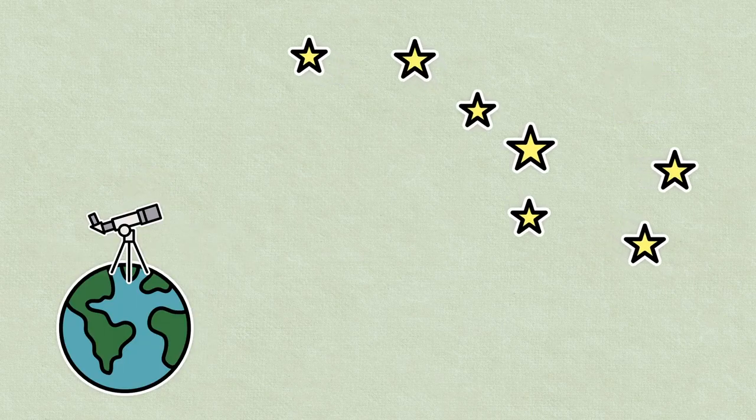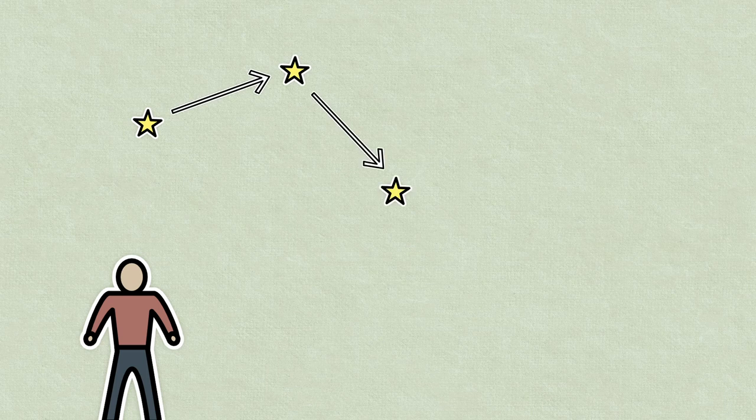The stars in a constellation may not be close to each other in space, but they appear close to each other in the sky when viewed from Earth. They are used as reference points to help people find their way around the sky.